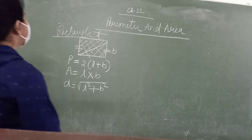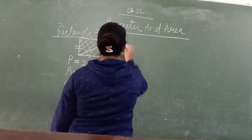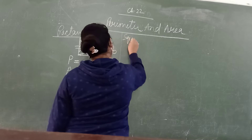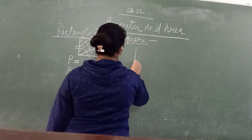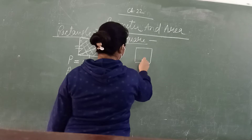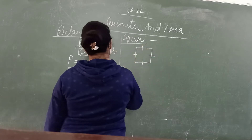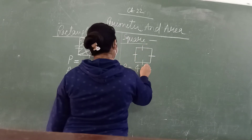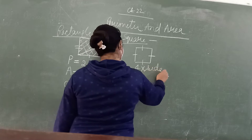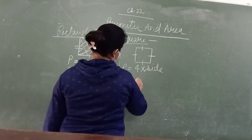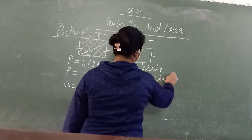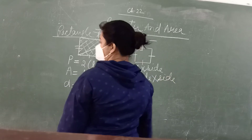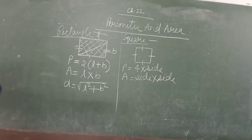Next we have the square. A square means that all four sides are equal. So, the perimeter of the square is 4 into side. And area is side into side, or side squared. So this is the formula which will be applicable in this exercise.